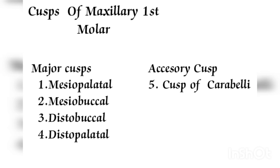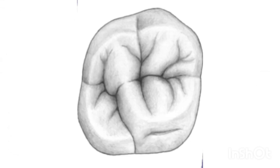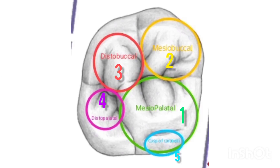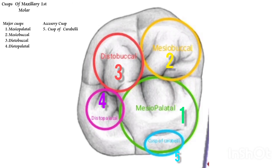The first largest cusp is the mesial palatal, followed by mesial buccal, distal buccal and distal palatal in a clockwise direction. Followed by the cusp of Carabelli.